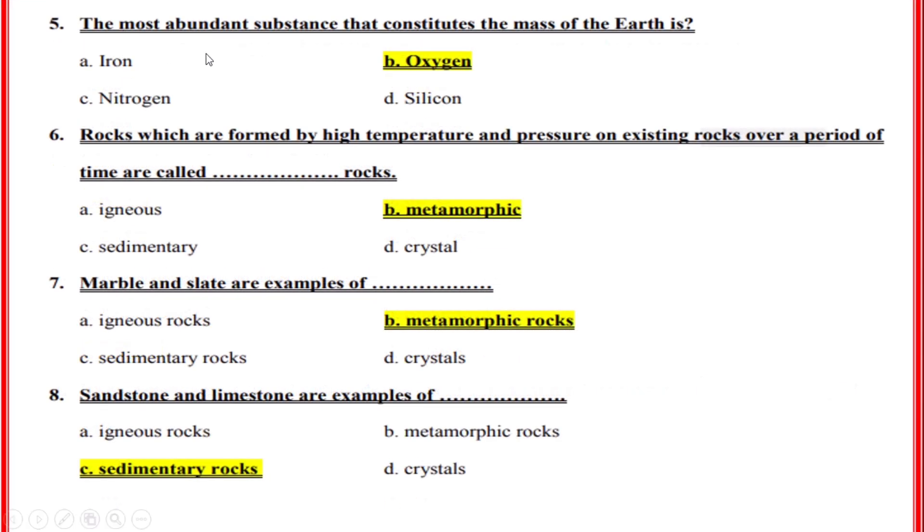The most abundant substance that constitutes the mass of the Earth is? Correct option: B, Oxygen.